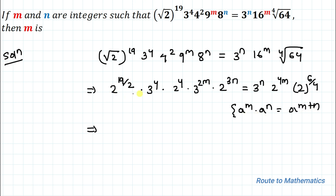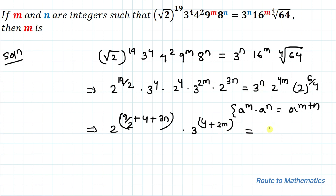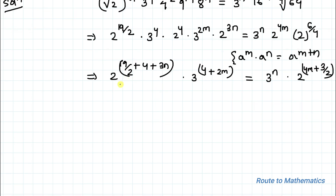So let's add the powers of the same base. We have 2 to the power (19/2 + 4 + 3n), multiplied with 3 to the power (4 + 2m), equals 3 to the power n, multiplied with 2 to the power (4m + 3/2). Now in the next step we will compare the powers of the same bases — that is, compare powers of 2 with 2, and powers of 3 with 3.